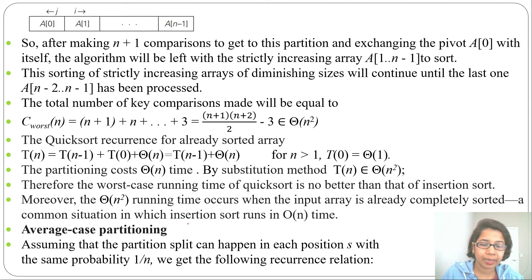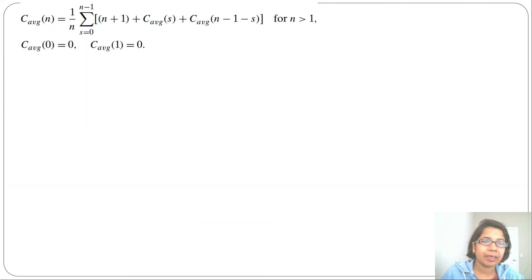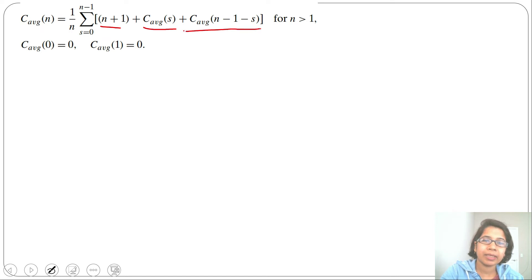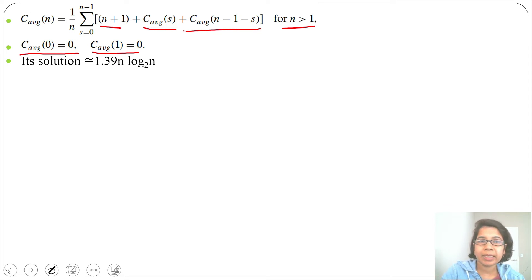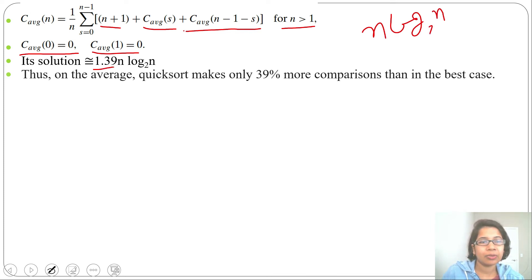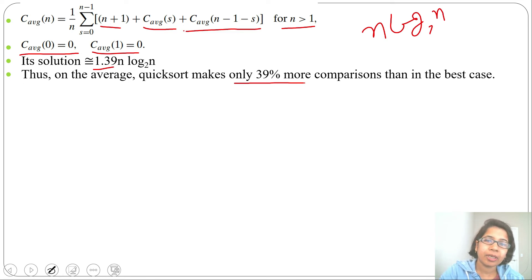Let's discuss average case partitioning. Assume the partition split can happen at each position s with the same probability 1/n. We get the recurrence: C_avg(n) = (1/n) × Σ(s=0 to n−1) [n+1 + C_avg(s) + C_avg(n−1−s)] for n > 1, with C_avg(0) = 0 and C_avg(1) = 0. Solving this gives the solution 1.39 n log₂ n. In best case it is n log₂ n, so average case makes only 39% more comparisons than best case.